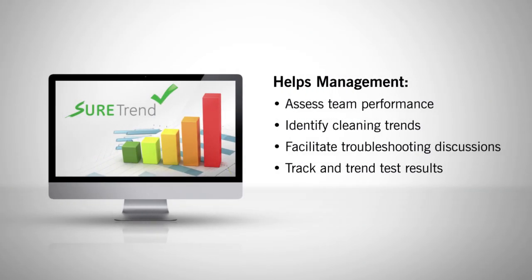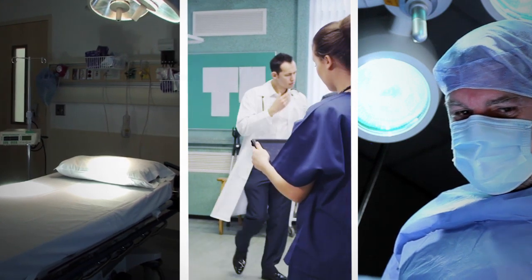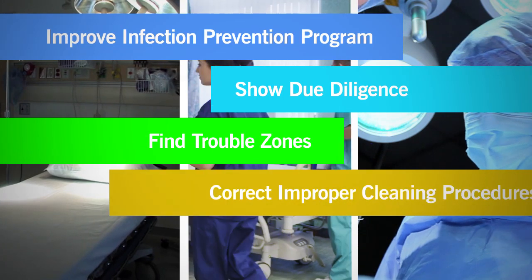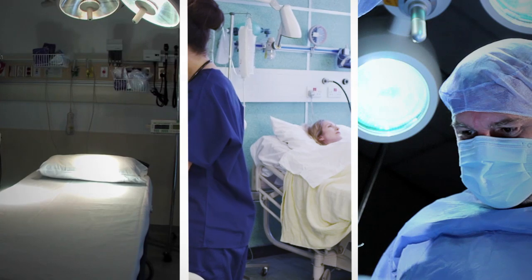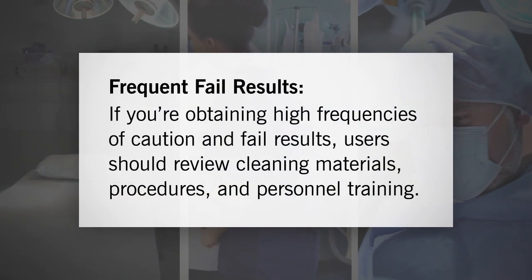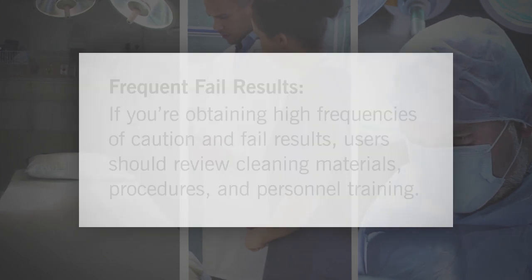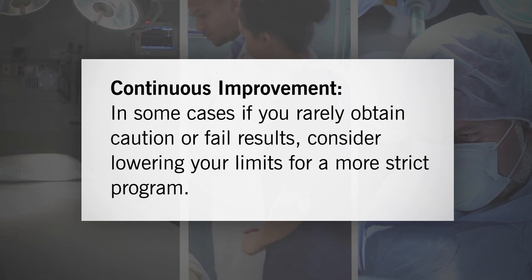SureTrend software helps management assess team performance, identify cleaning trends, facilitate troubleshooting discussions, and track and trend test results. Constantly looking to improve your infection prevention program shows due diligence and is crucial to finding trouble zones, correcting improper cleaning procedures, and decreasing risk of infection from poorly cleaned surfaces. If you're obtaining high frequencies of caution and fail results, users should review cleaning materials, procedures, and personnel training. In some cases, if you rarely obtain caution or fail results, consider lowering your limits for a more strict program.